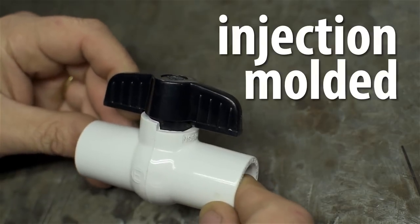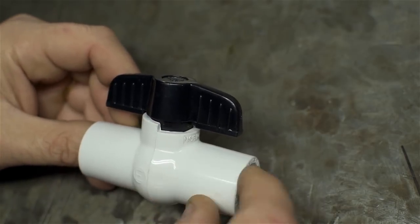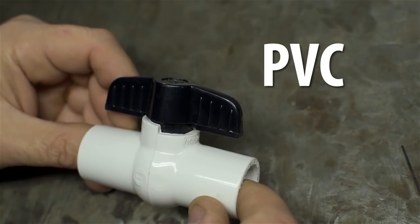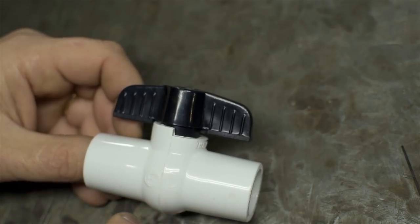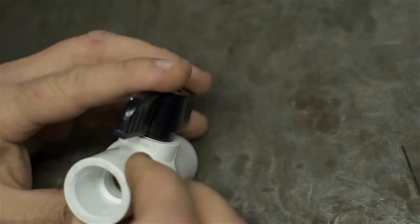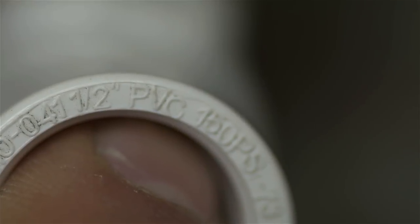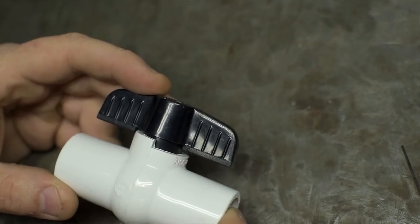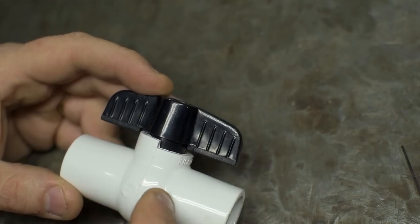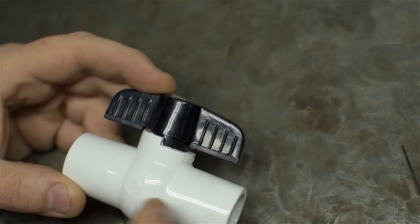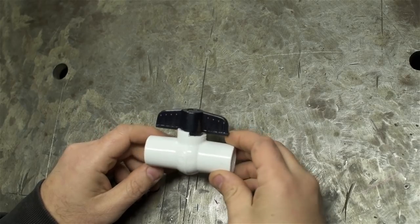Now, this entire valve is injection molded. And the body, the white part, is made of a plastic polymer called PVC. I know that because it said so on the box it was in at the store. It also says it right there. Let's talk about injection molding a minute because it's fundamental to how this valve is made. And more to the topic of this video, how it reaches its price point.